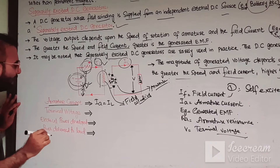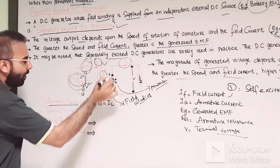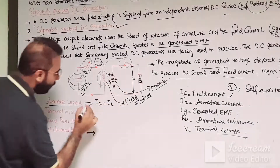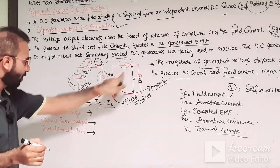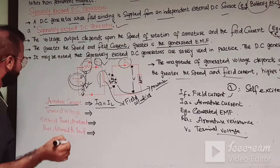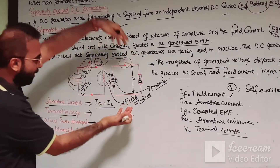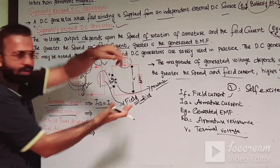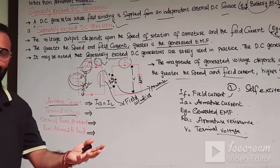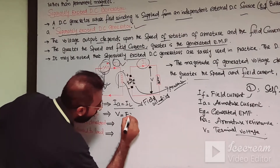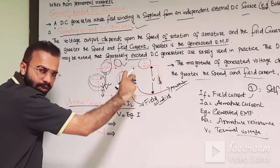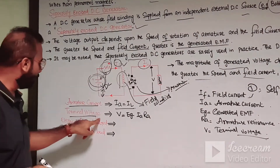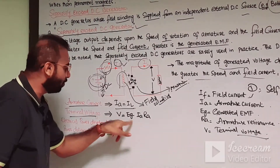The armature current is produced within the armature winding of the machine. In the case of the separately excited DC generator, IL equals IA — the armature current equals the load current. The terminal voltage V is the voltage taken from the load side, and it equals: V = EG − IA × RA. So the terminal voltage of the separately excited DC generator is V = EG − IA × RA.